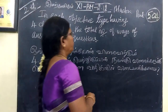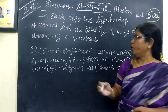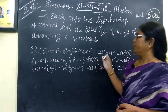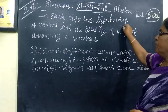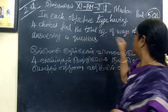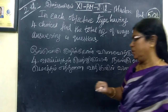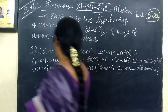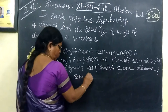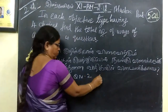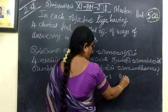You are given 4 objective-type questions, each having 4 choices. Find the total number of ways of answering these 4 questions: question number 1, question number 2, question number 3, and question number 4.